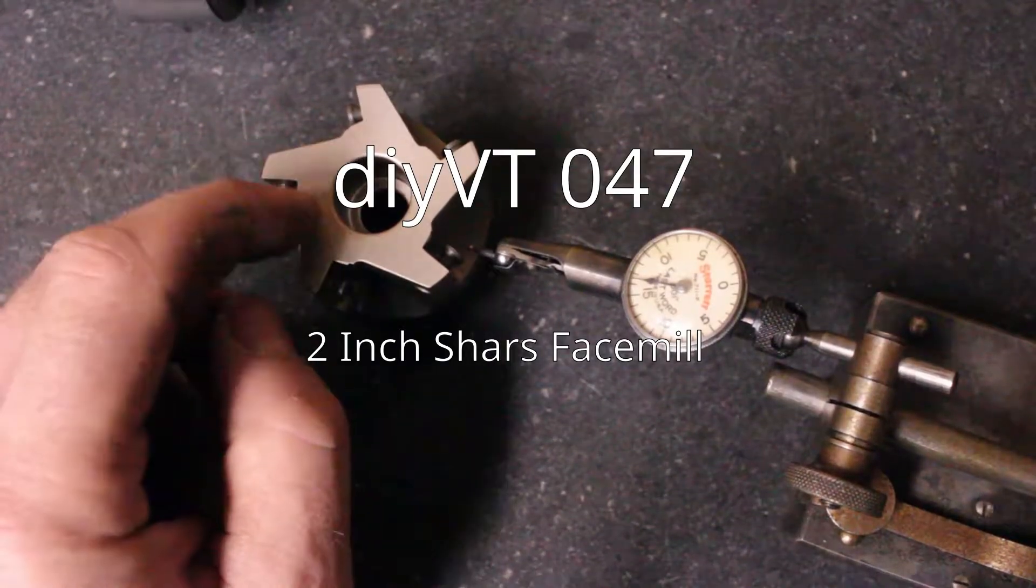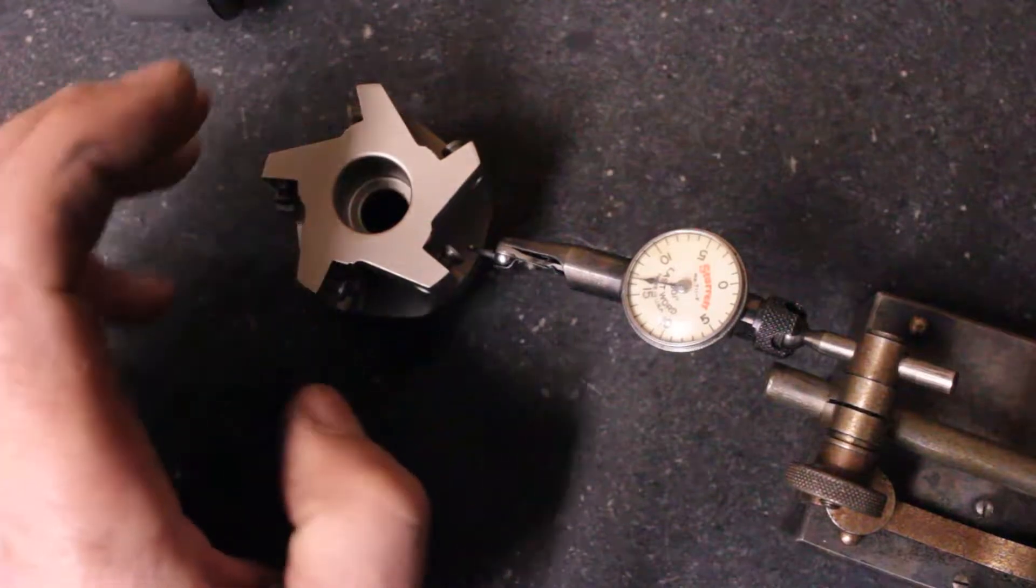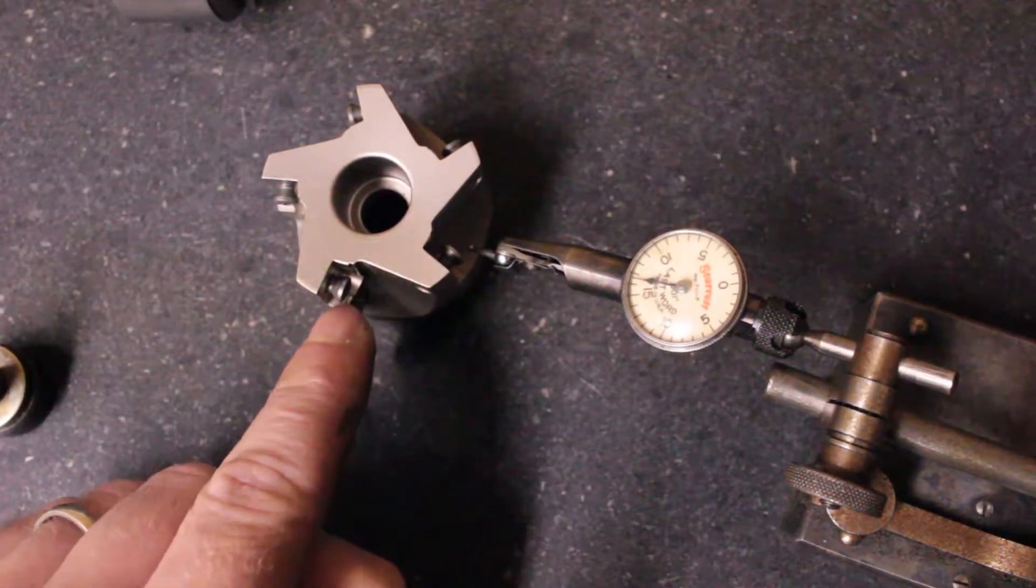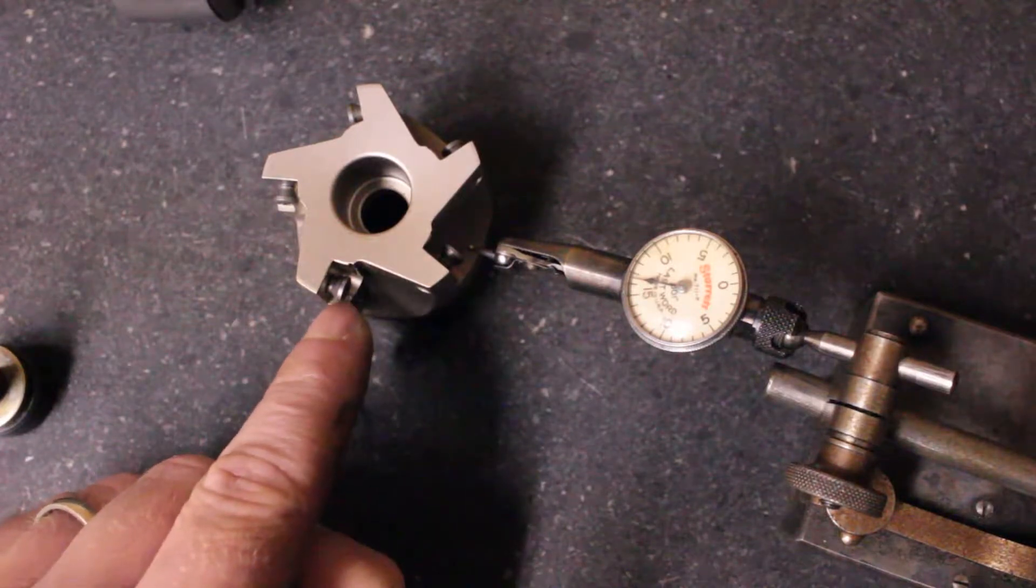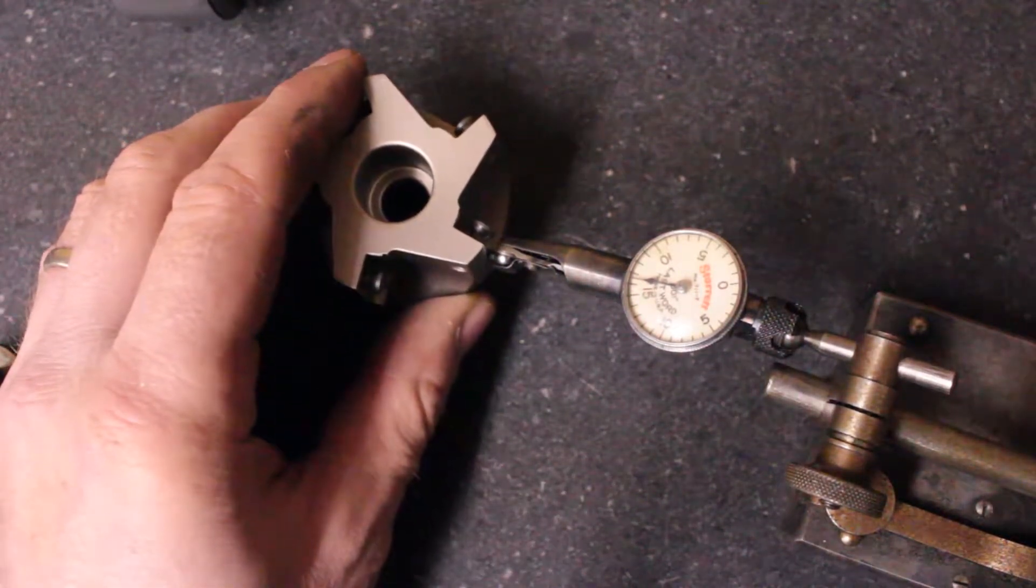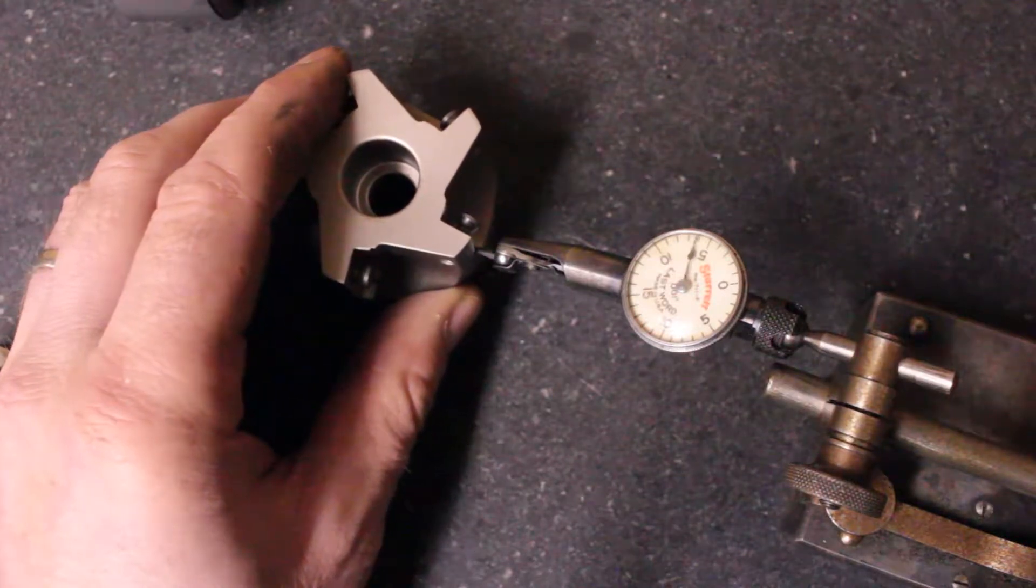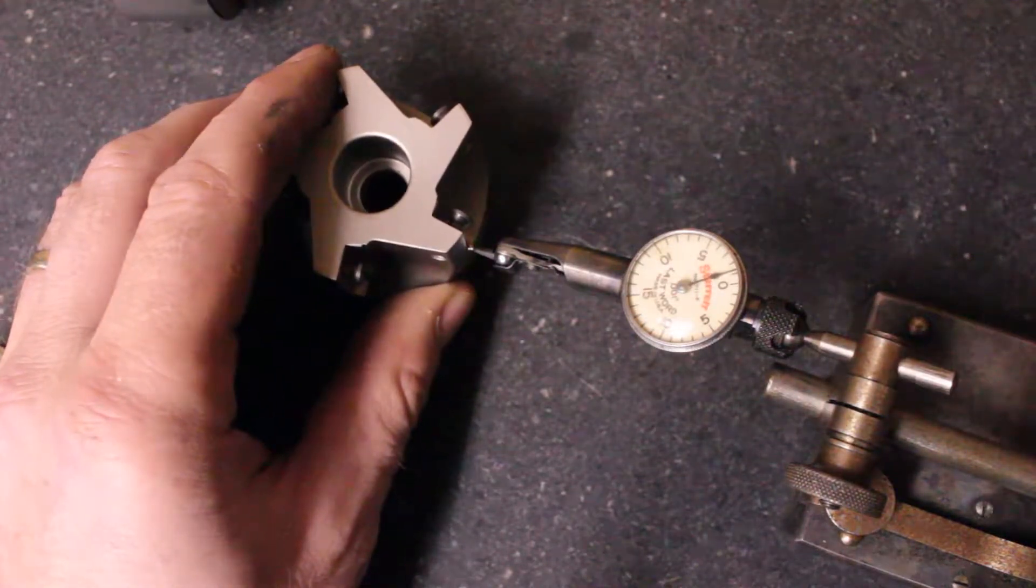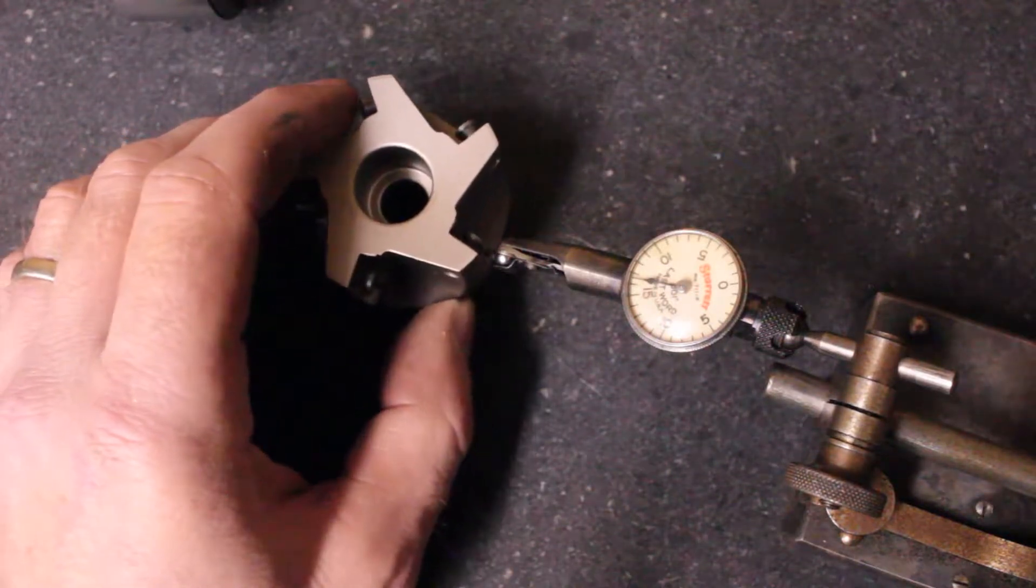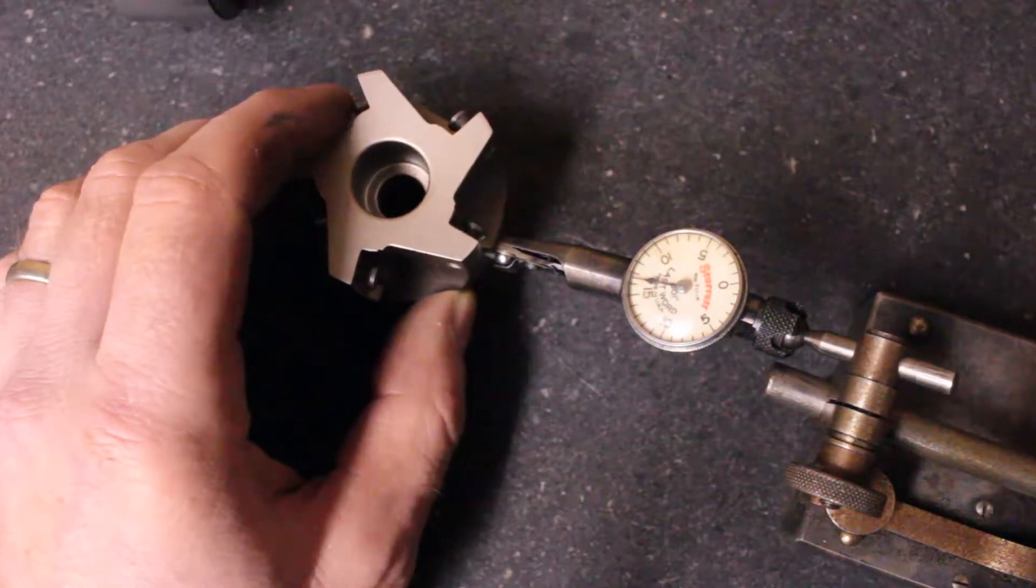So I got this new face mill from Shars, and I'm going to check out how accurate the insert notches are. I can check them out this direction with the surface plate and indicator. So that is reading just about zero. I don't have a good angle on the indicator with the camera in there, but it's pretty close.